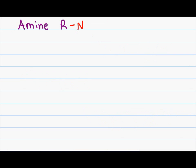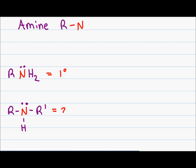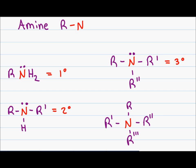Amines are characterized by having a nitrogen bound to the carbon chain, but unlike carbon classification, an amine is identified by how many carbons are attached directly to the nitrogen. A primary amine is classified by a nitrogen with one R group attached to it. A secondary amine is classified as having a nitrogen with two R groups attached to it and just one hydrogen. A tertiary amine is classified as a nitrogen with three R groups attached to it. And the rare quaternary amine is classified as a nitrogen with four R groups and a positive charge — this charge comes from the formal charge for nitrogen, which is five minus four, giving you positive one.